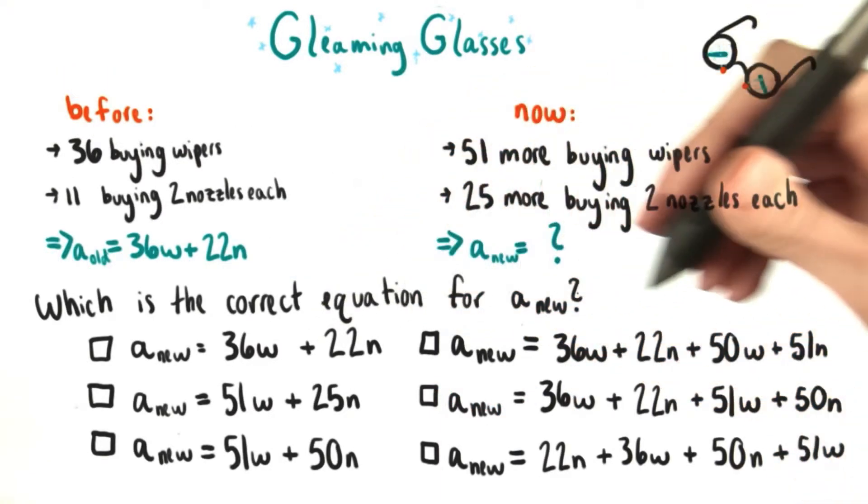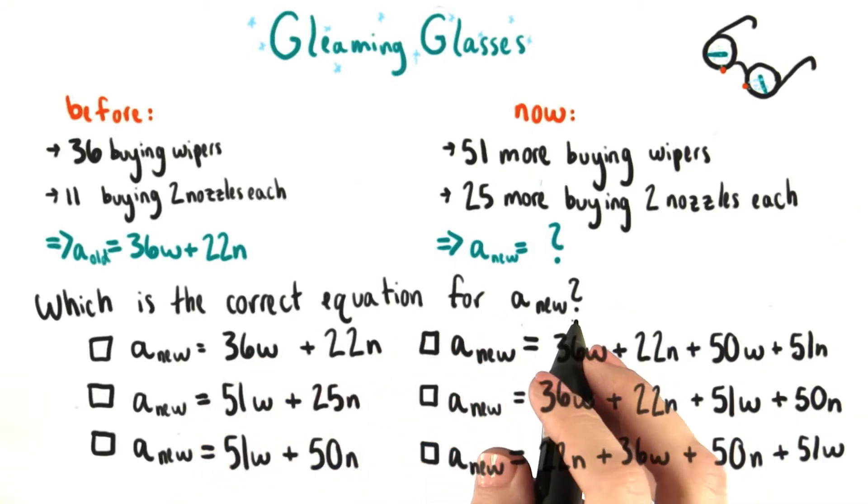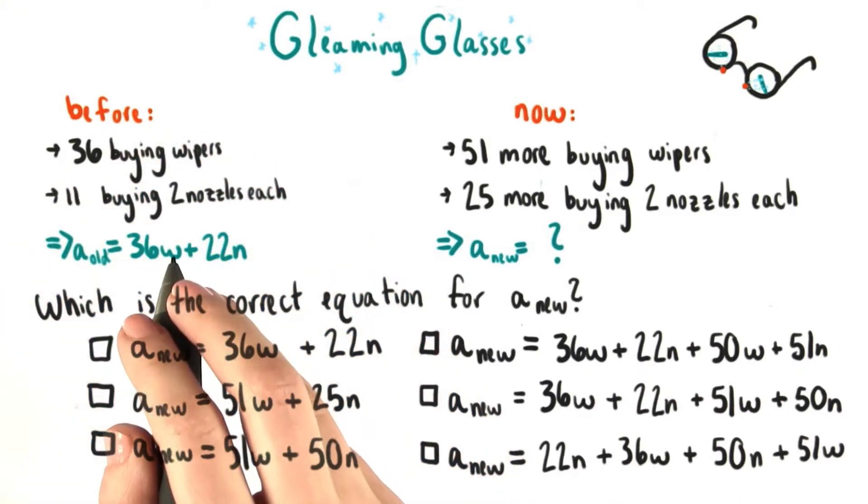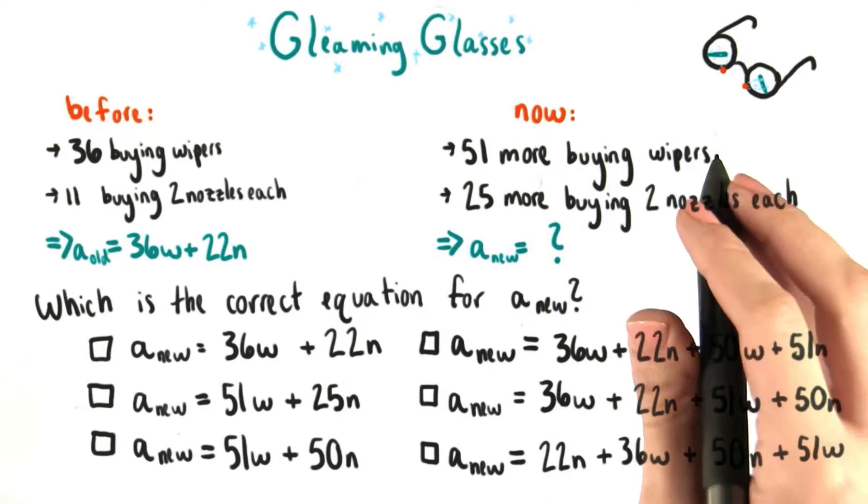So which of these equations down at the bottom is the correct equation for A new? The total amount of money that Grant will have after these people on the first day buy his wipers and nozzles, and these people from the second day buy his wipers and nozzles.